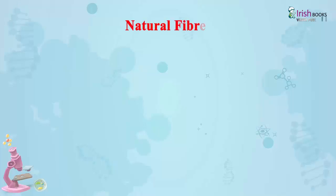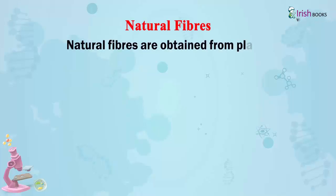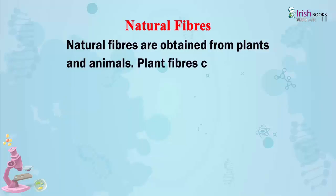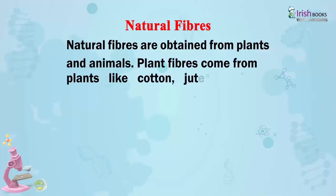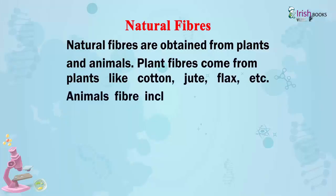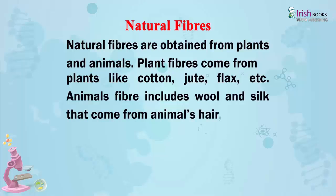Natural Fibres: Natural fibres are obtained from plants and animals. Plant fibres come from plants like cotton, jute, flax, etc. Animal fibres include wool and silk that come from animals' hair, fur, etc.